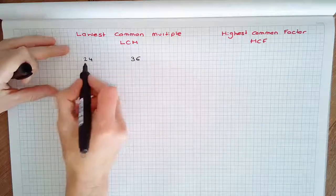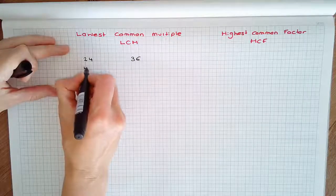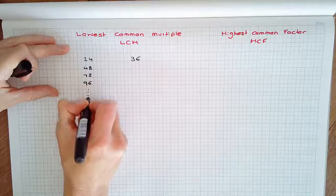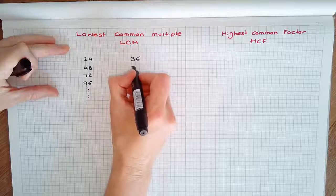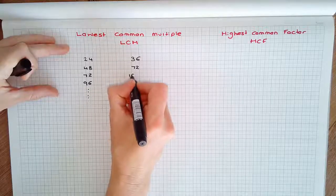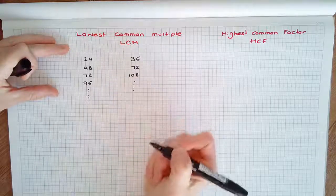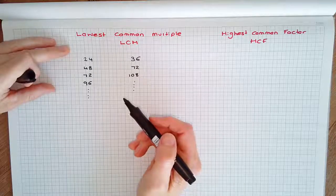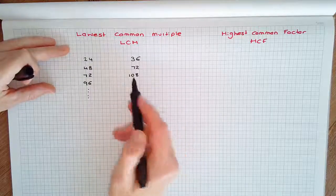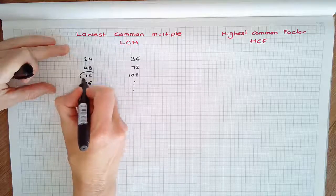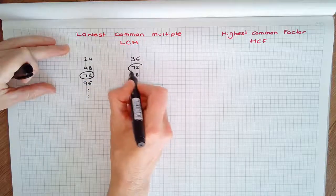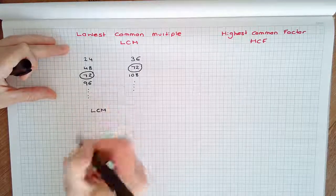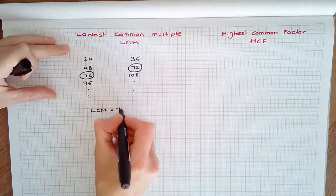Now the multiples of 24 are 24, 48, 72, 96, etc. And the multiples of 36 are 36, 72, 108, etc. There's no need for me to continue because we're looking for the smallest whole number that is a multiple of each. And you can see that 72 is in both lists. So we say that the lowest common multiple of 24 and 36 is 72.